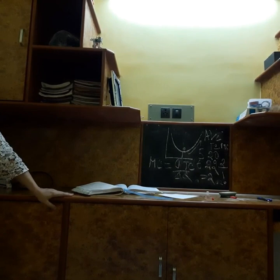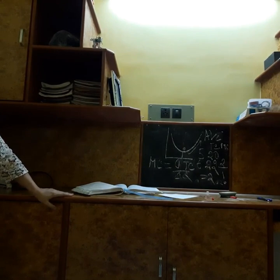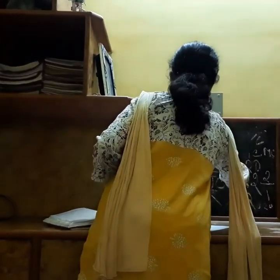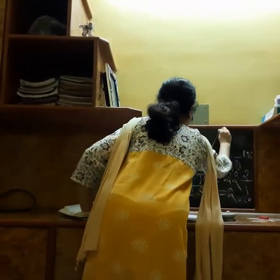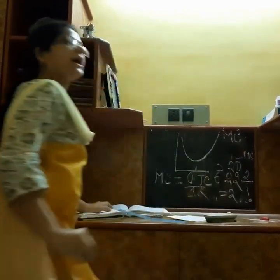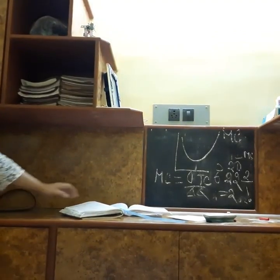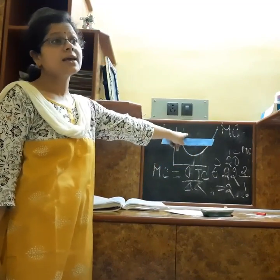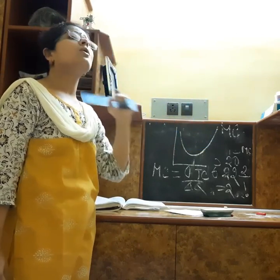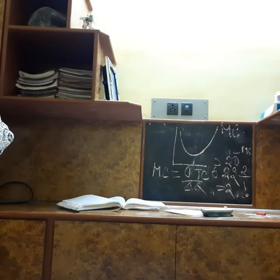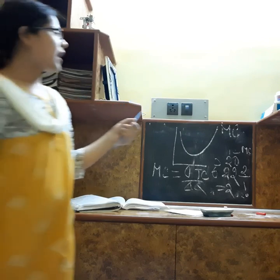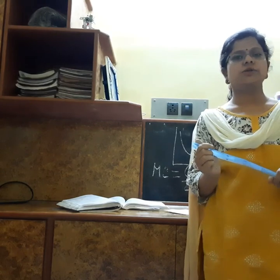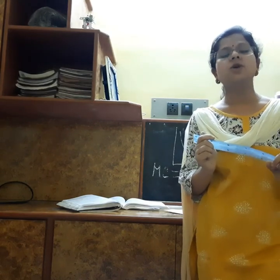MC shows the change in total cost due to change in output. The shape of the MC curve is also U-shaped — at first it falls, then reaches its minimum point, then starts increasing. Remember that MC is only related to variable cost; it is not connected with fixed cost. So if there is no production, there is no occurrence of MC.